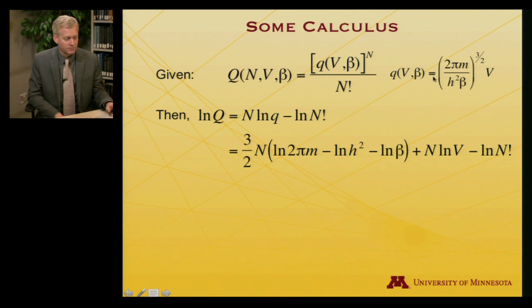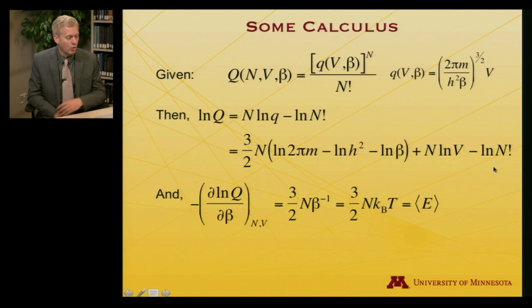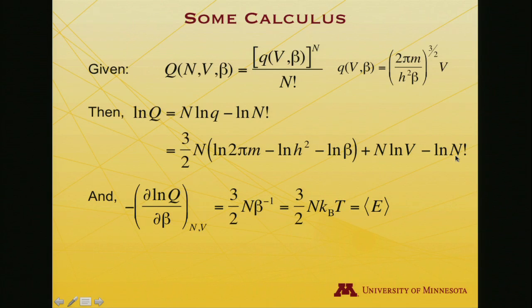Now let me expand this log of q, because q is a whole bunch of things taken to powers and divided by one another. The power comes out front, 3 halves. There is still this factor of N that was multiplying log q before, so 3 halves N, and then log of 2πm minus log of h squared minus log of beta, because they're in the denominator, plus N log times the volume, and I still have this leftover minus log N factorial term.